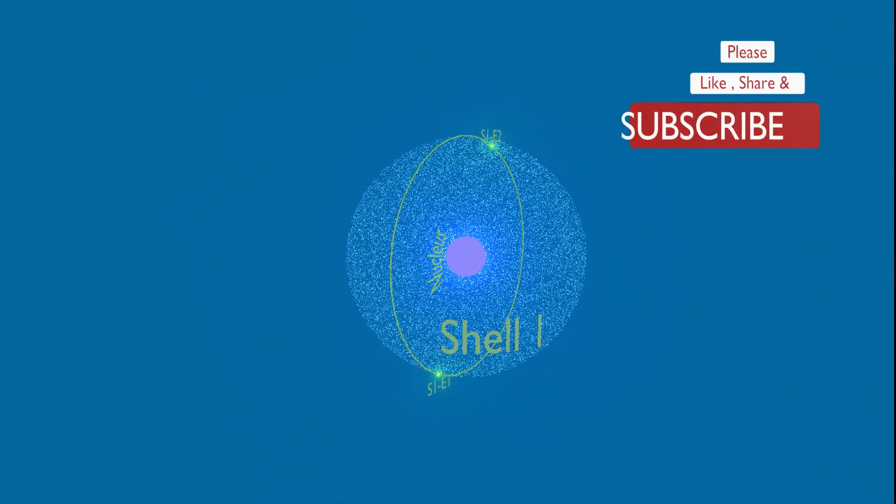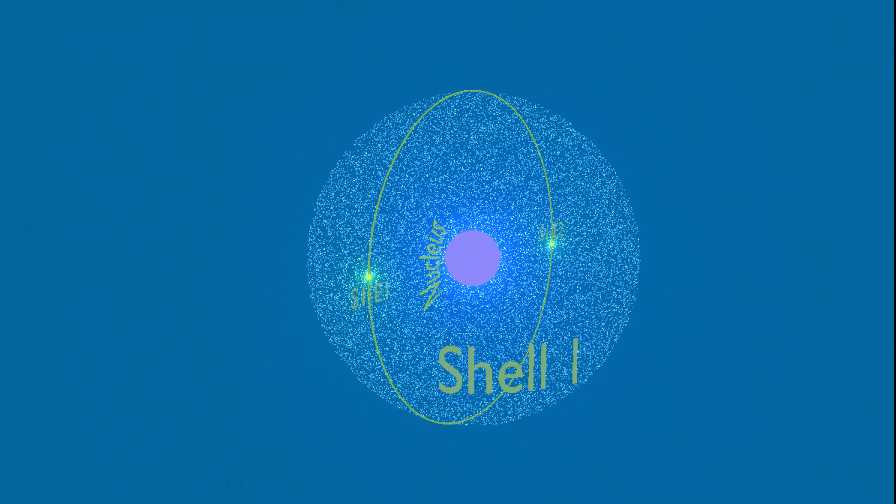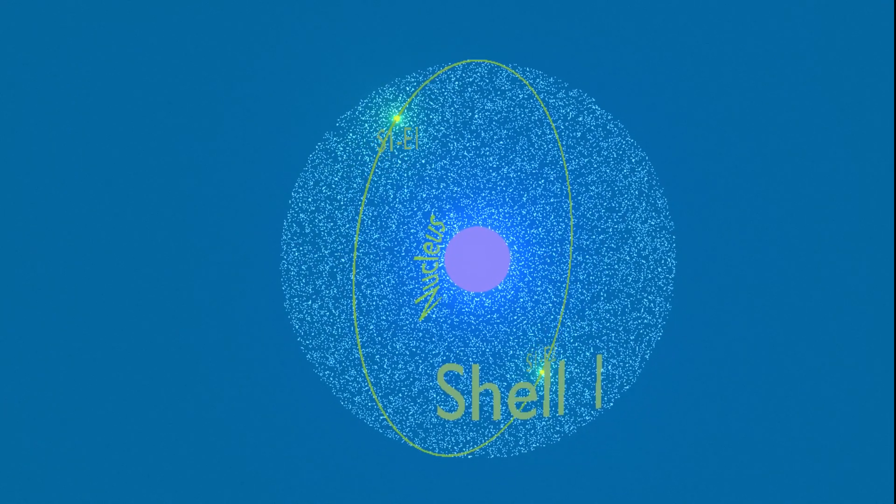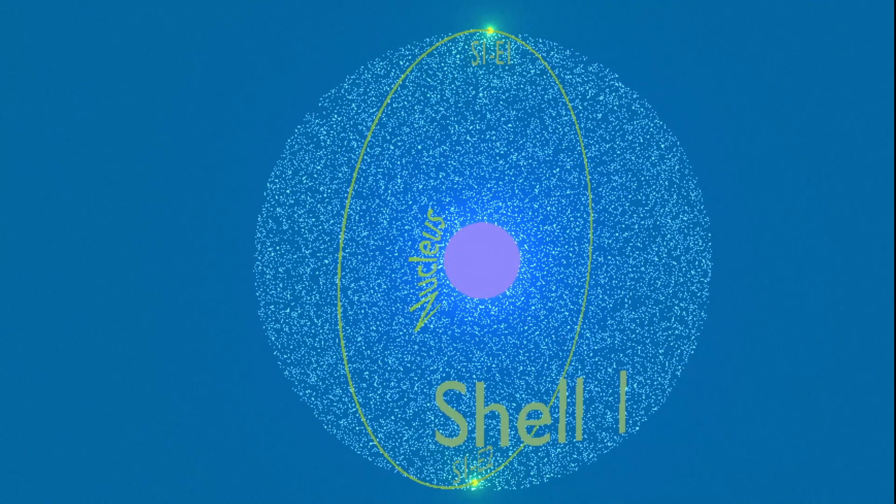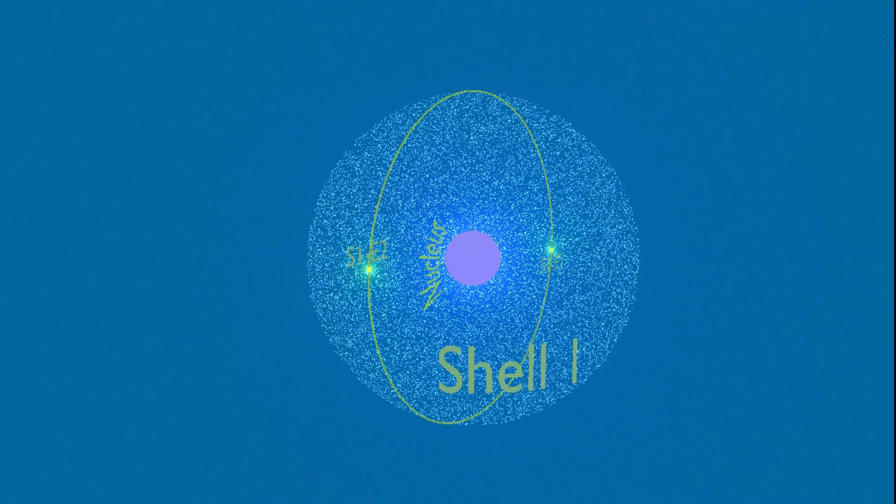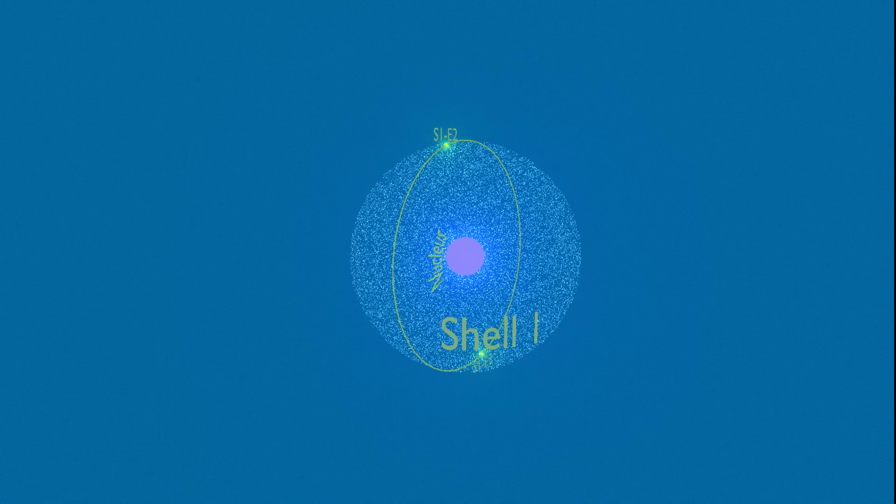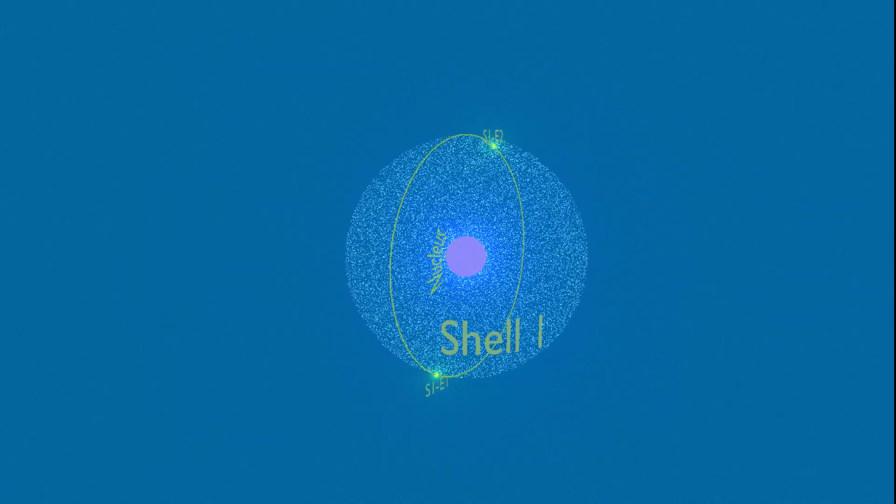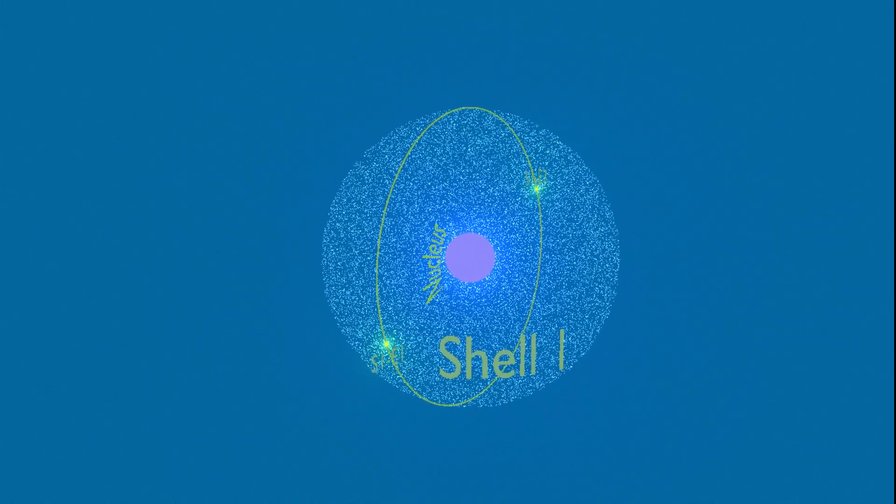Now let us look at the model of an atom as a whole. This atom has two electrons revolving around the nucleus. As we know, the number of electrons must always be equal to the number of protons in an atom. We can say that this atom must have two protons inside the nucleus.